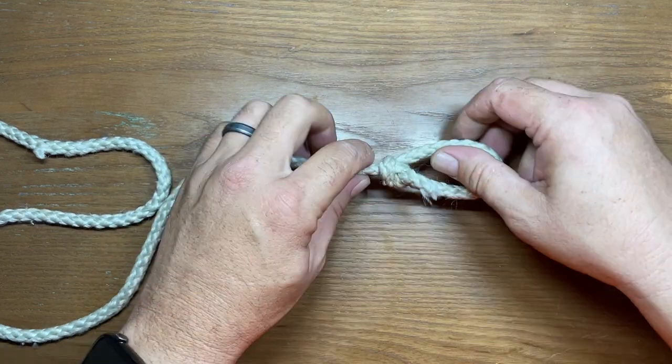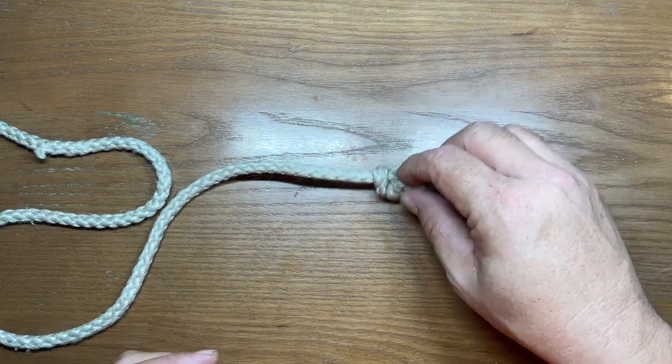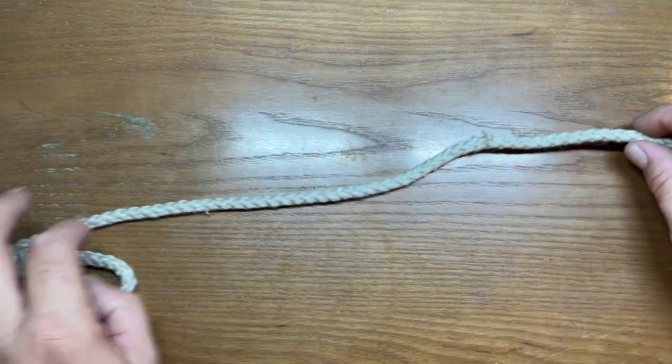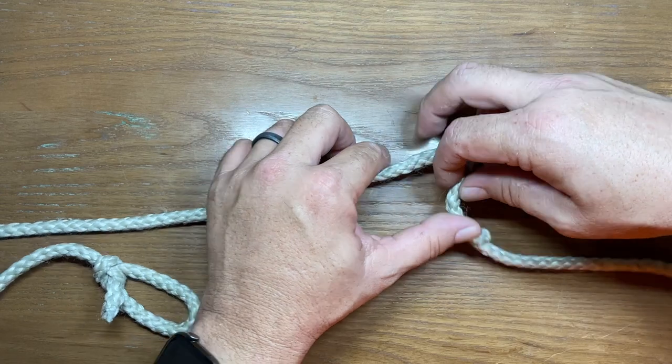You can trim off the excess after you get this tight because this is going to be a stationary thing once we get done with it. Now all we have to do is the exact same thing on the opposite end.